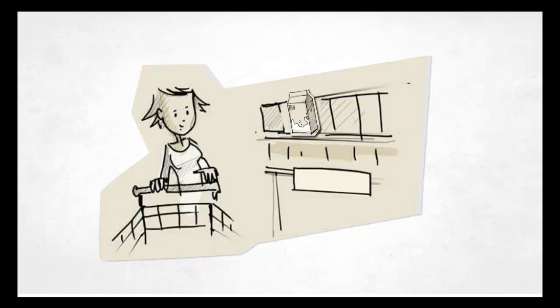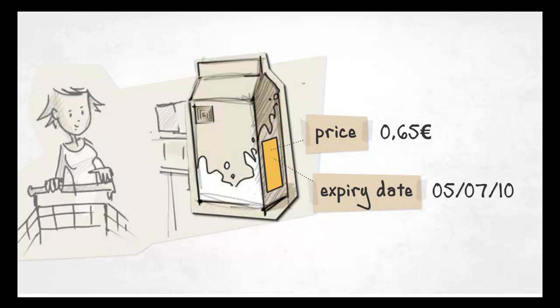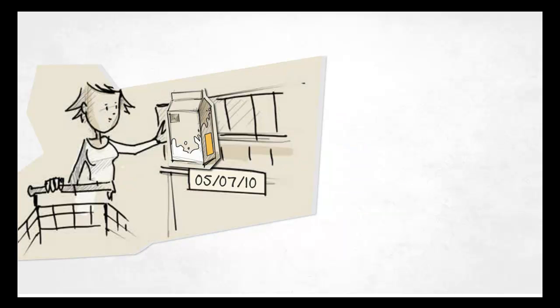Imagine that you buy a carton of milk in a supermarket. The carton's RFID tag has stored the price and the milk's expiry date. When you pick up the carton, the shelf can immediately display the carton's expiry date.